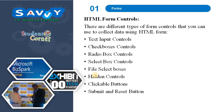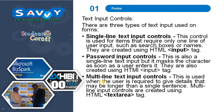HTML form controls: there are different types of form controls you can use to collect data using HTML forms — text input controls, checkbox controls, radio box controls, select box controls, file select boxes, hidden controls, clickable buttons, and submit and reset buttons.